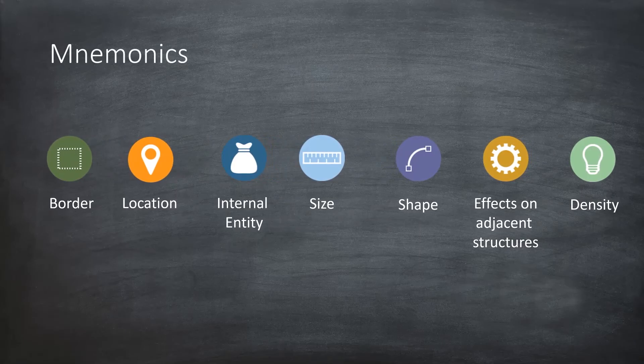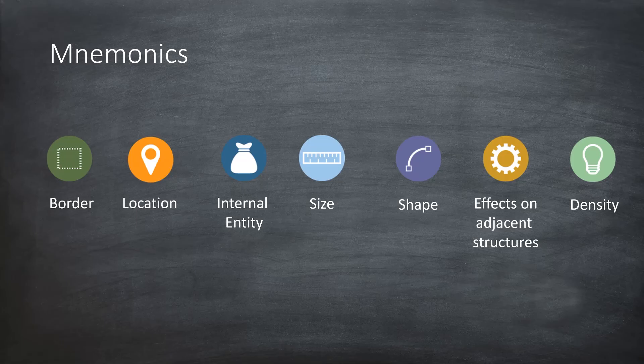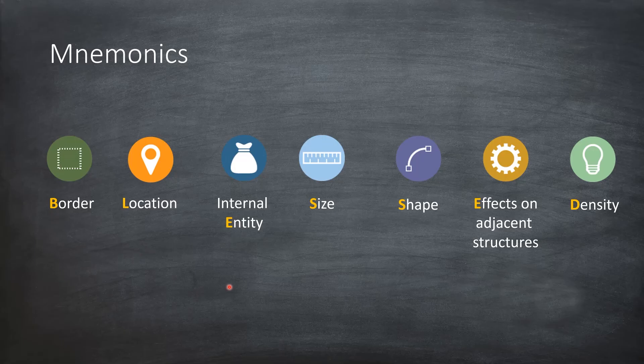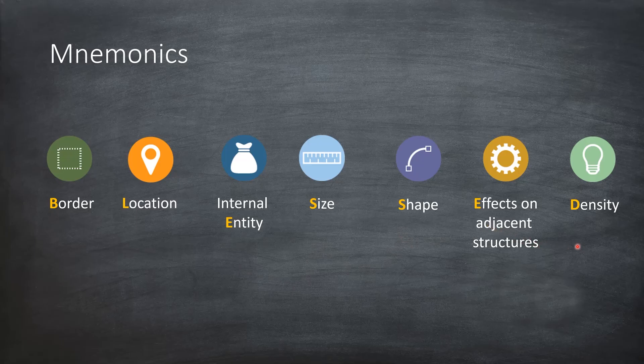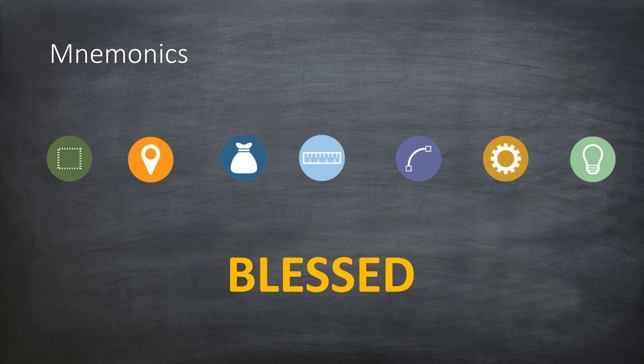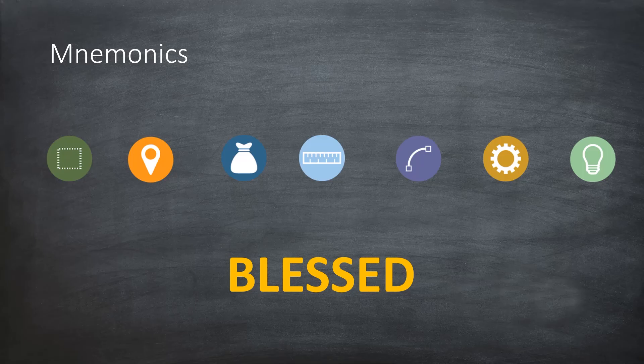Now I can remember them better. Border, Location, Entity, Size, Shape, Effects, and Density. Aha! Now I feel I am blessed that I can remember all the seven radiographic features to describe.